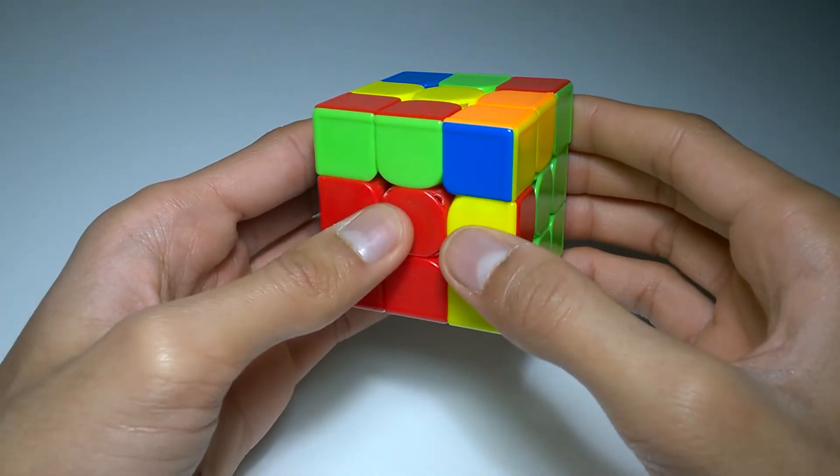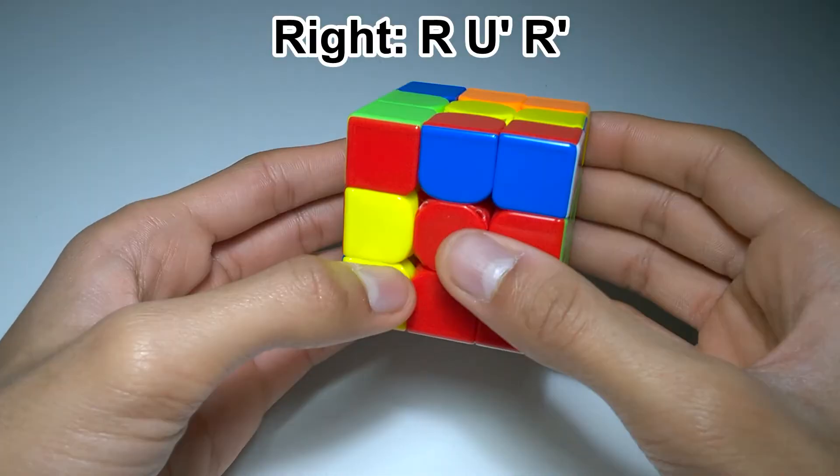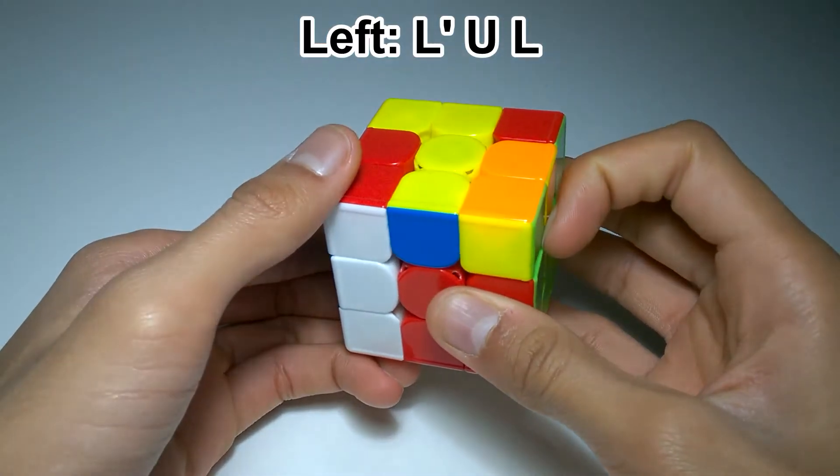To insert an F2L pair going into the right, you do R U' R', and to insert an F2L pair going into the left, you do the mirror, which is L' U L.